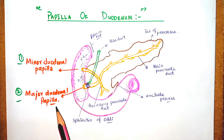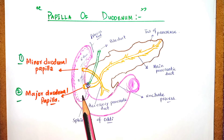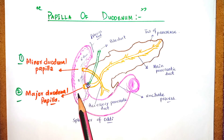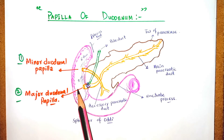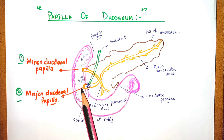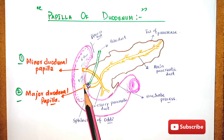The major duodenal papilla is also called the papilla of Vater. It is a small rounded elevation present posteromedially, where the bile duct and the main pancreatic duct open into the duodenum. It is almost 8 to 10 centimeters distal to the pylorus. The major duodenal papilla is the primary mechanism for the secretion of bile and other enzymes that facilitate the digestion process.